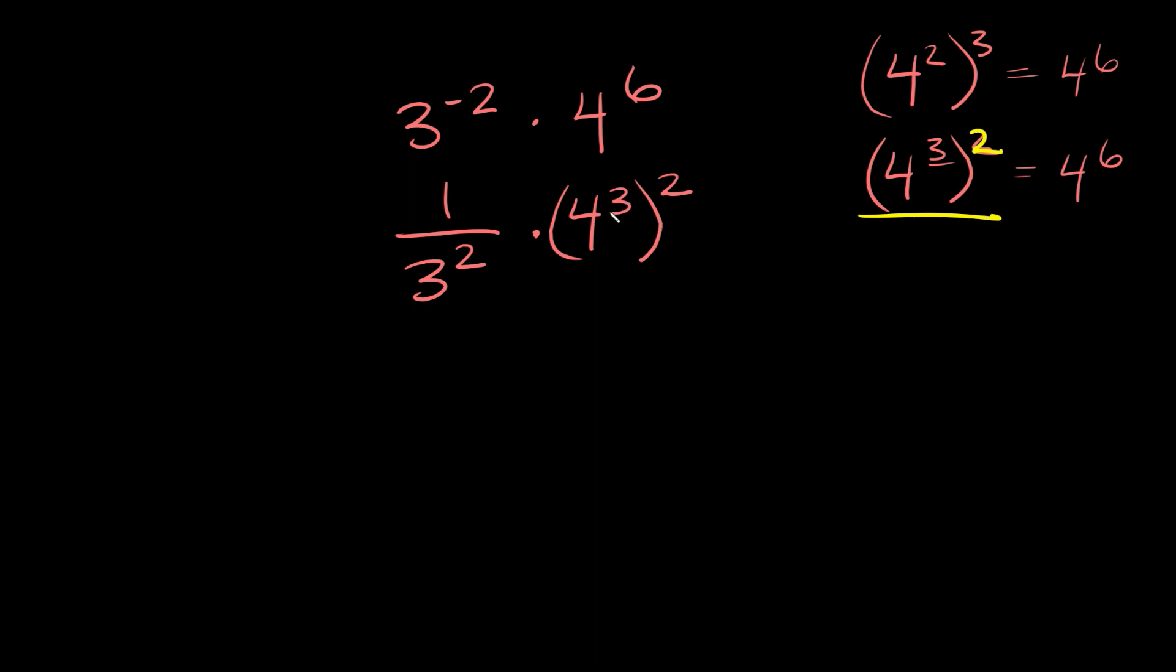Now what is 4 cubed? So 4 cubed is equal to 64. So here, let's rewrite this. We have 1 over 3 squared times 64, times 64 squared.